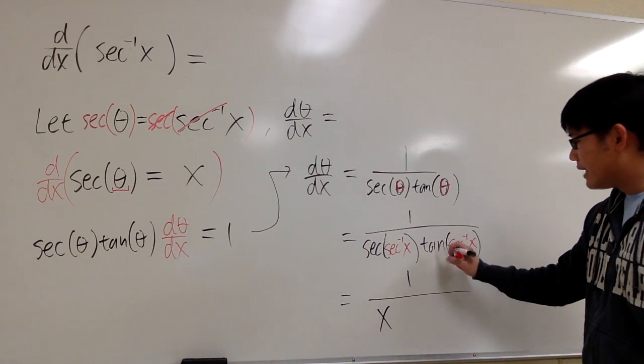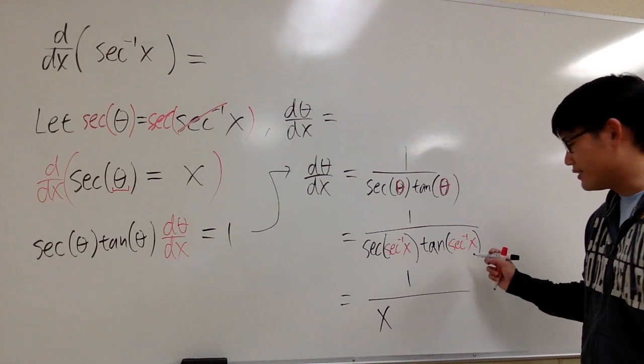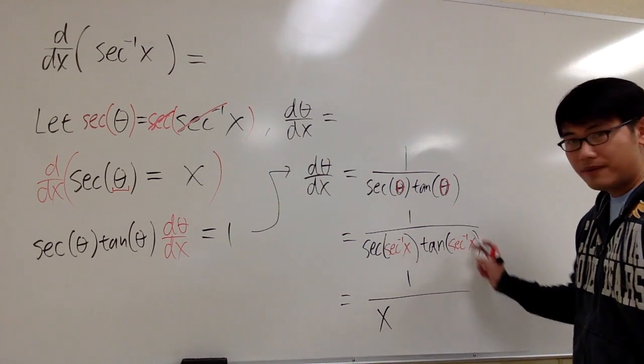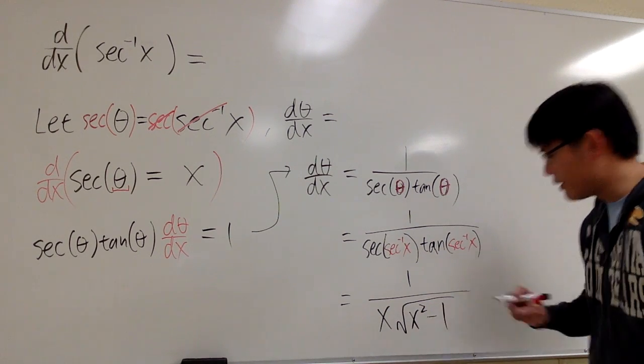And for this part, tangent of inverse secant x. Let me just tell you the answer for this. This part right here is equal to square root of x squared minus 1.